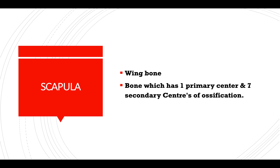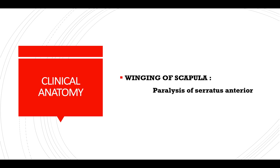Scapula, also known as the wing bone. It is the bone which has one primary center and seven secondary centers of ossification. Clinical anatomy of the scapula: winging of the scapula is due to paralysis of the serratus anterior.